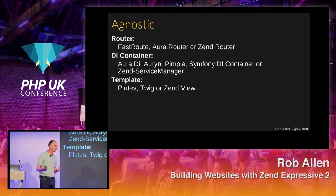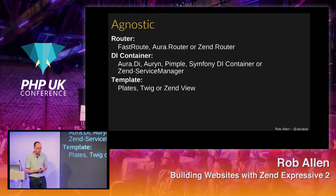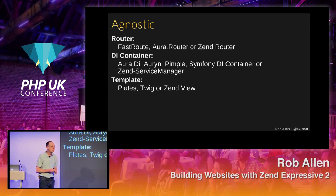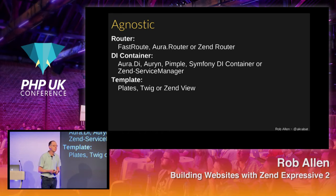For DI containers there's a lot of choice. I personally think Zend Service Manager is a really good DI container, so I'm quite happy it is the default. But Aura DI and Auryn are also really good. If you want auto-wiring, then Auryn or the Symfony DI container might be better choices for you.